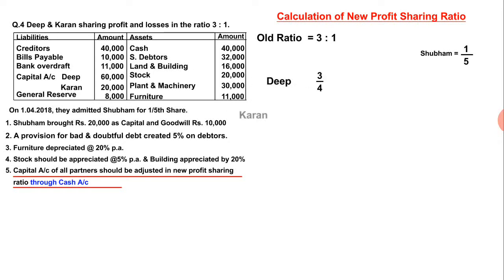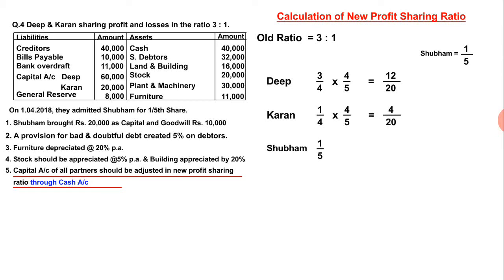Deep's initial fraction is 3/4 and Karan's is 1/4. Shubham joined the firm for 1/5 share. Since the new partner takes 1/5, the remaining share is 4/5. Multiplying Deep's share: 3/4 × 4/5 = 12/20. The new ratio becomes 12:4:4, and dividing by 4 gives a new ratio of 3 is to 1 is to 1.